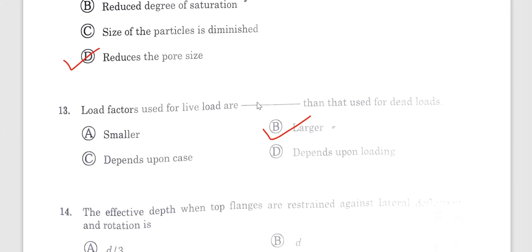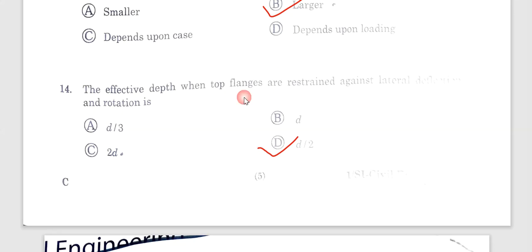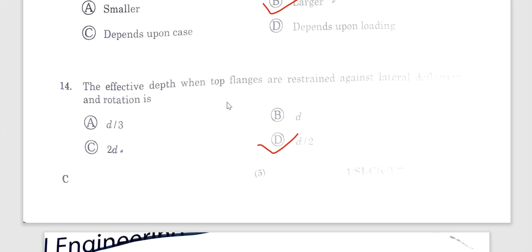Question 13. Load factor. Load factor generally for live load is 2.2 and dead load generally 1.5. Option B is the correct answer. Load factor used for live loads are larger than those used for dead loads. Question number 14. Effective depth when top planes are resting against lateral deflection and rotation. The answer will be D by 2. Effective depth is width of the depth divided by 2.